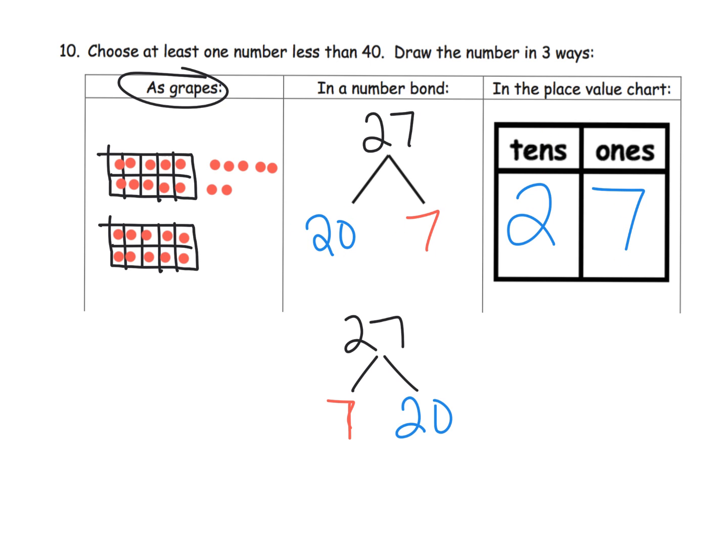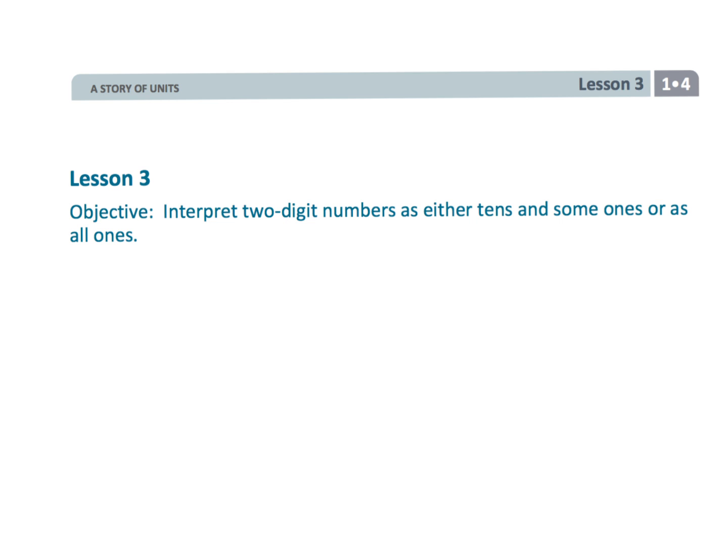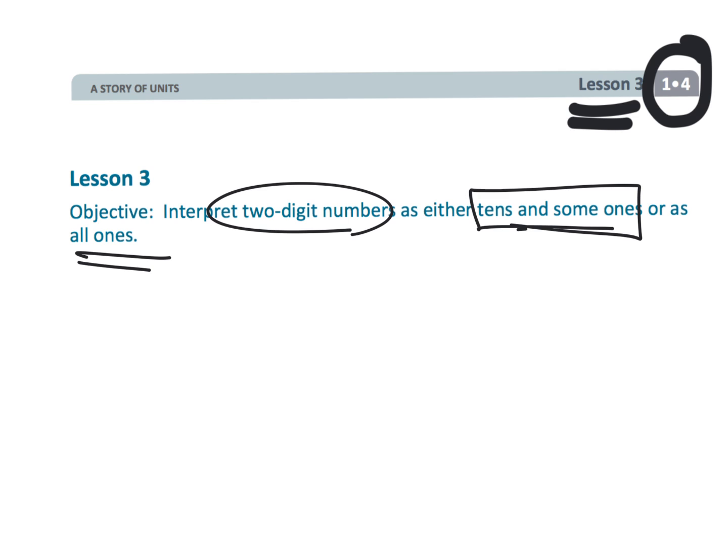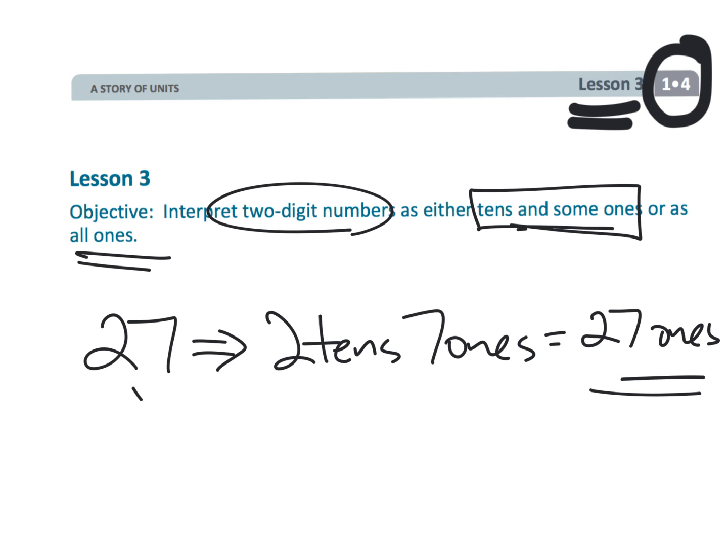And that wraps up first grade module 4 lesson 3, where students are continuing to interpret the two-digit numbers in a variety of different ways. Particularly this time, not only are we thinking of it as tens and some ones, but we're also thinking of it as all ones. So 27 is two tens seven ones, but it's also 27 ones. And that's the tricky one right there.